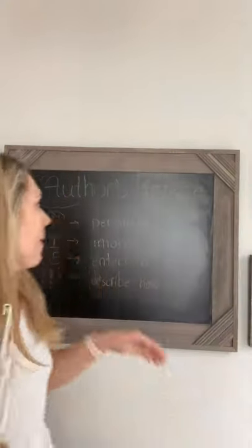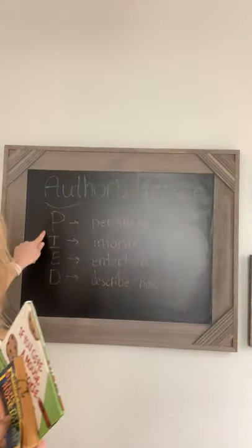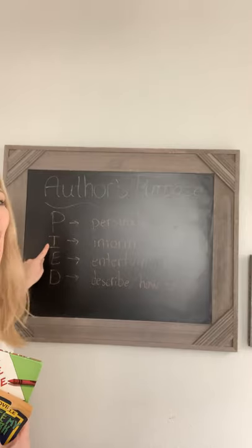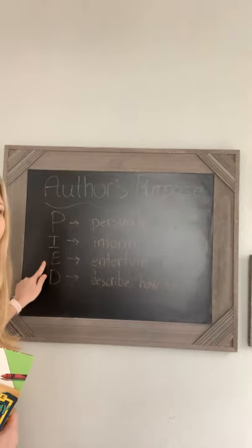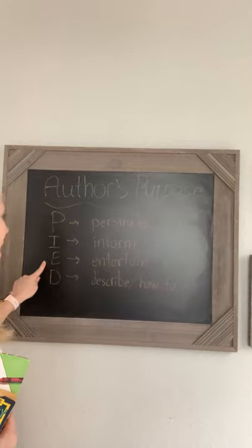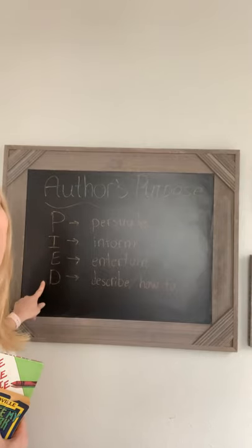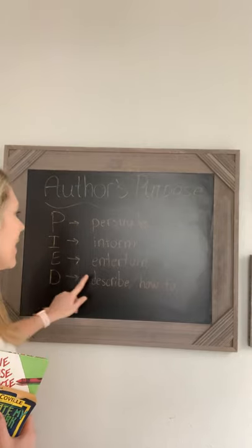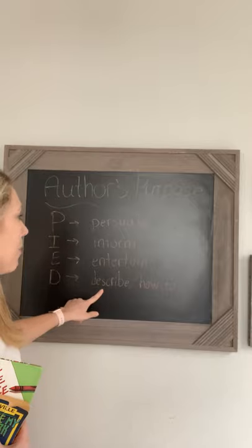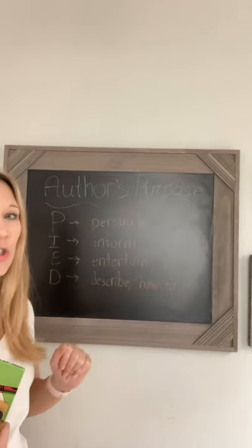Today we are going to review author's purpose. When we're thinking about author's purpose, you guys have been taught PIE: P — persuade, I — inform, E — entertain. But there's also a D. D is describing something, or like a how-to.